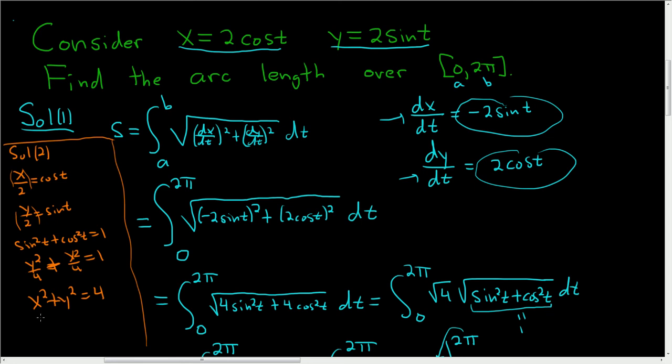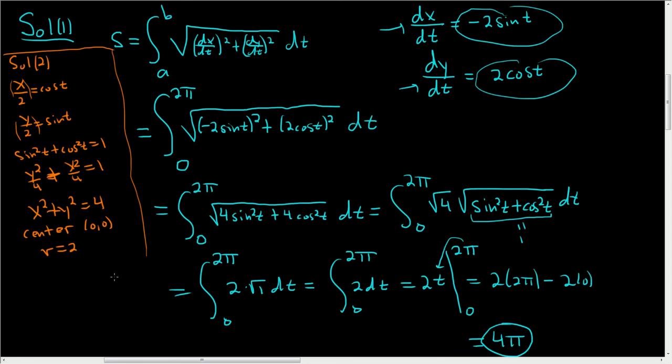So this is a circle, and it has center (0,0), and it has radius 2. And so we know that the circumference of a circle is 2πr. So r is 2, so you just end up with 2π times 2, which is 4π.